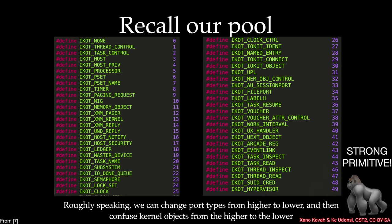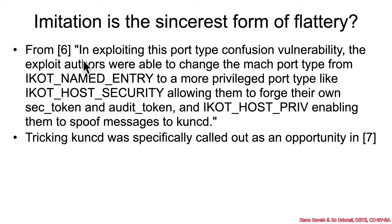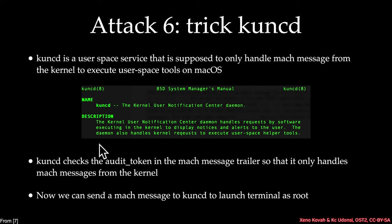That is a very strong primitive. Going back to the description, the exploit authors were able to change the mach port type from a named entry to a host security port, which allowed them to forge their own security token, audit token, and IO kernel object type host privilege — enabling them to spoof messages to configd. If you read reference 7, tricking configd was specifically something they called out: it's a user-space service that handles mach messages for privileged things. They made a proof of concept in their talk to launch a terminalized root, and the real attackers used that as inspiration and did exactly that.